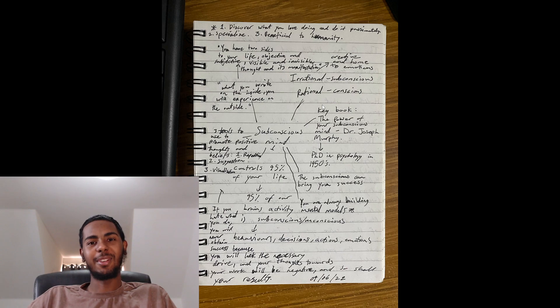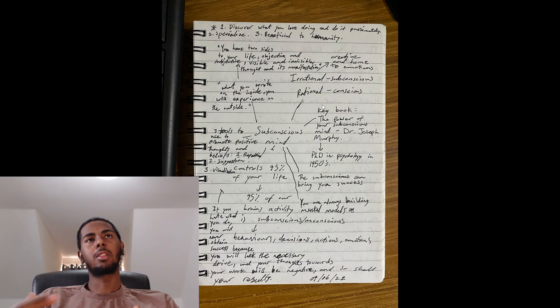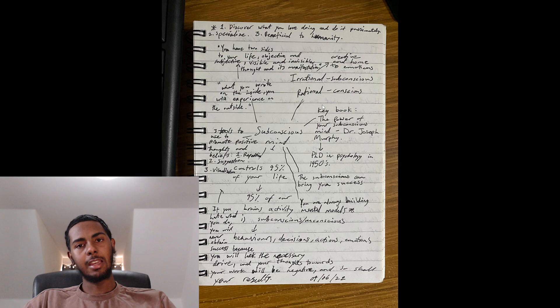Now the next one is what you write on the inside you will experience on the outside. So basically same thing, good thoughts produce good actions, bad thoughts produce bad actions. Next point is you have two sides to your life, the objective and subjective, the visible and invisible, thoughts and its manifestation, basically the conscious and the subconscious mind, those two sides.